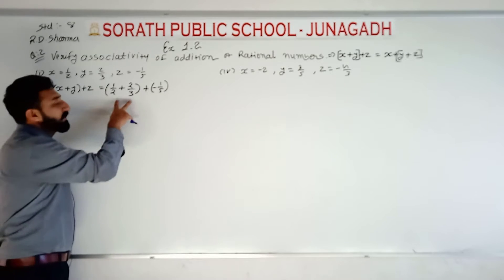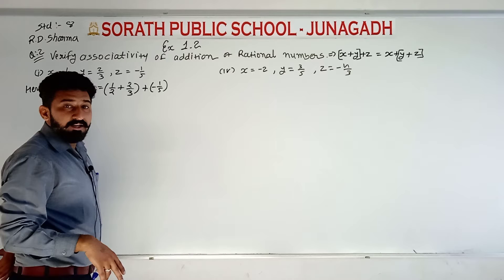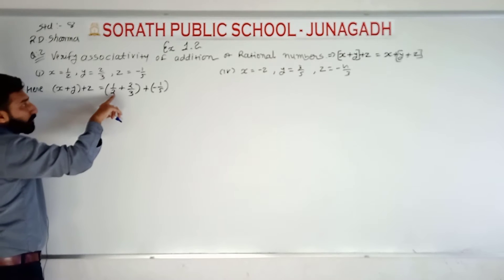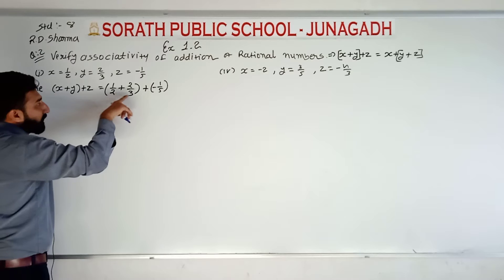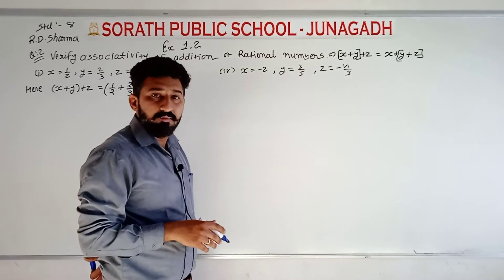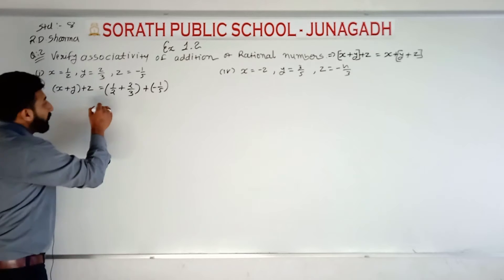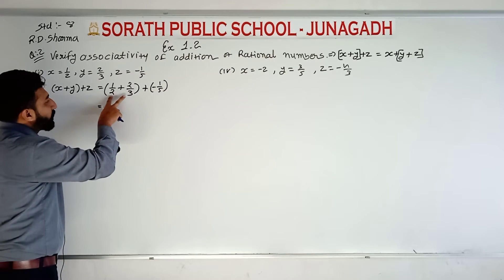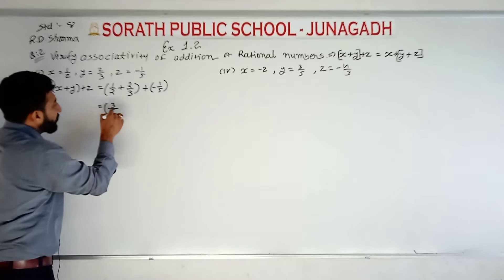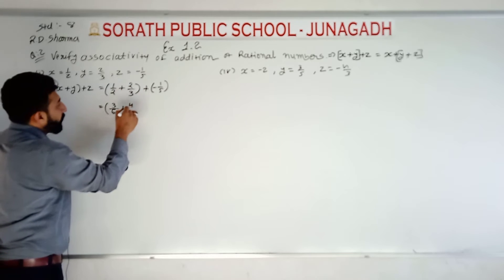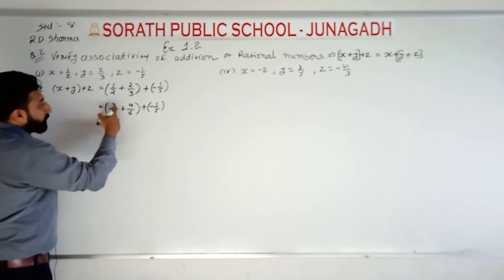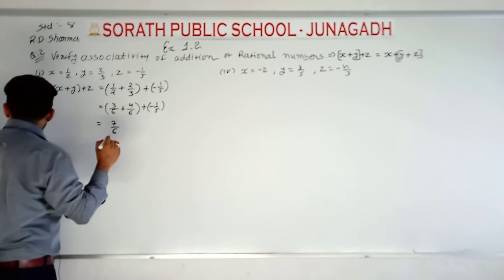We can use the LCM of 2 and 3, which is 6, or we can use cross multiplication as a short method. The cross multiplication: 3 multiplied by 1 and 2 multiplied by 2, with the denominator being 6. Three ones are three upon six, plus two twos are four upon six. Three plus four equals seven upon six.